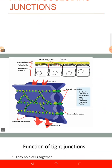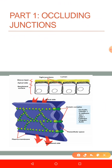Let's look at the occluding junctions. Occluding junctions are defined as junctions that prevent intercellular exchange of substances, such as ions like sodium and potassium, and molecules. A very good example of occluding junctions are the tight junctions, which are also called zonular occludins.